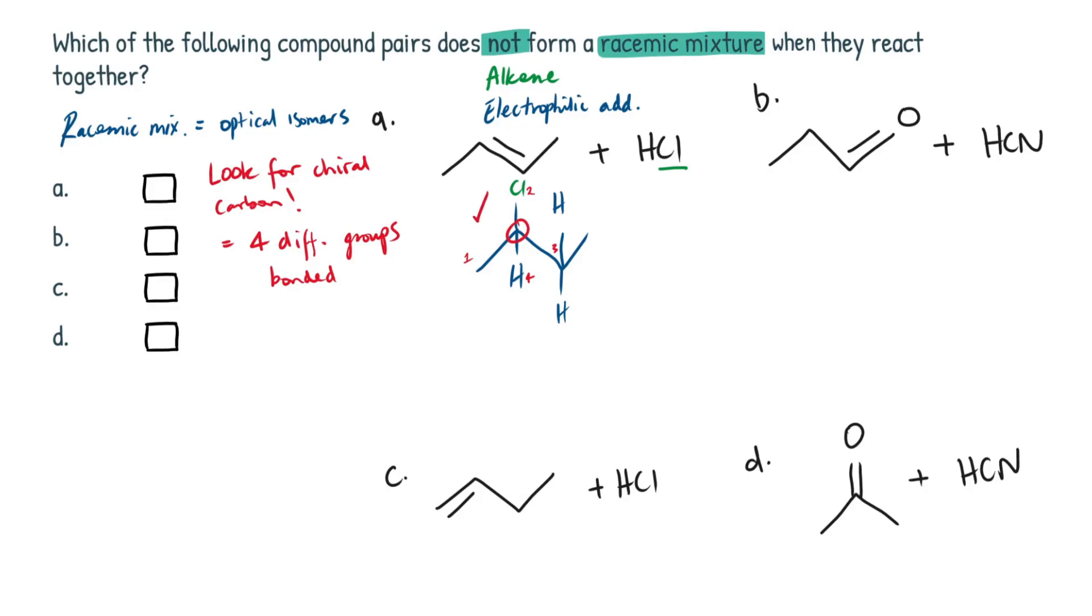All right, moving on to compound pair B. So this is an aldehyde. The double bond is on the end. And the mechanism that's going to take place here when reacting with the cyanide ion, this is the nucleophile, is going to be nucleophilic addition.